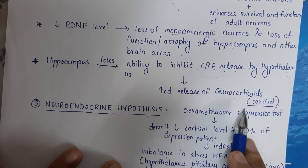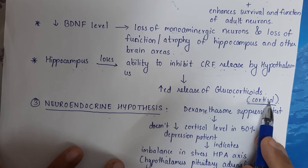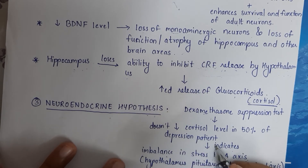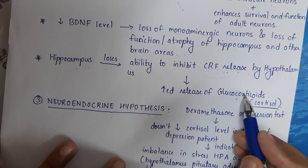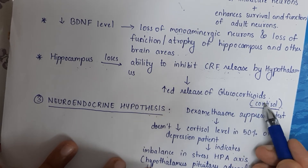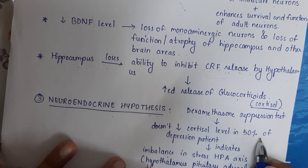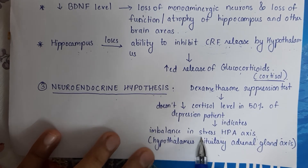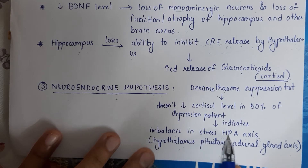When the dexamethasone suppression test is done, they expect cortisol levels to decrease. But what is observed is that it doesn't decrease the cortisol level in 50% of depression patients. They expected it to decrease because dexamethasone is similar to cortisol — both belong to glucocorticoids. So if dexamethasone is getting suppressed, cortisol is also supposed to get suppressed. But it didn't decrease — and that indicates an imbalance in the stress HPA axis.